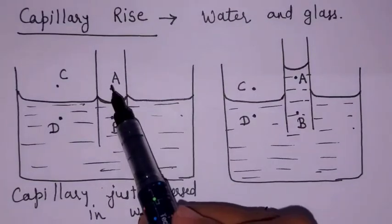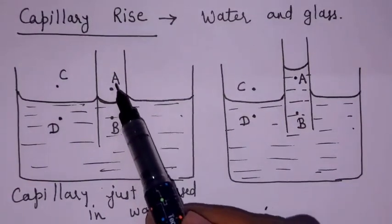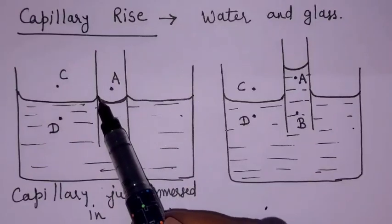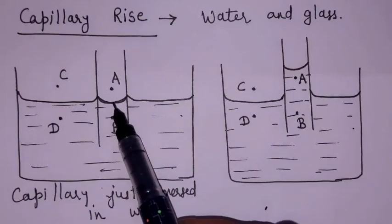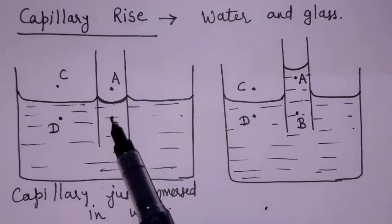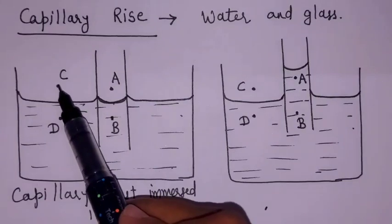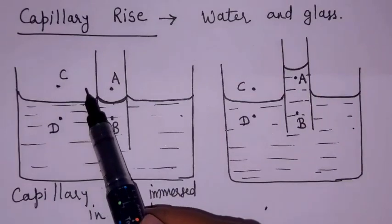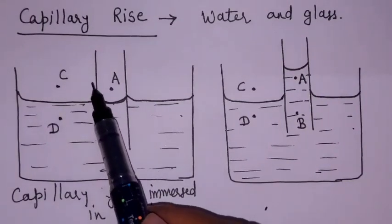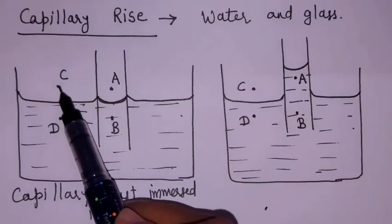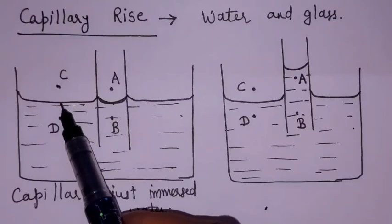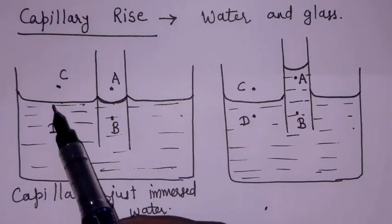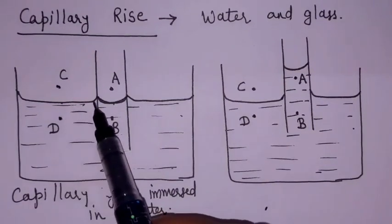We again take four points. Point A is just above the liquid surface but inside the capillary. Point B is just below the liquid surface inside the capillary. Point C is at the same level as A but outside the capillary, above the free liquid surface. Point D is just below point C, inside the liquid on the flat surface side.